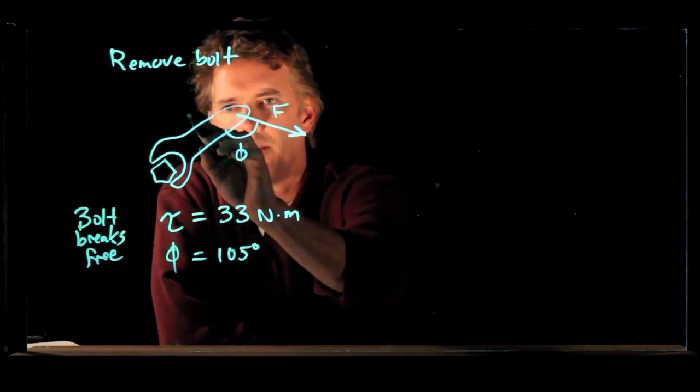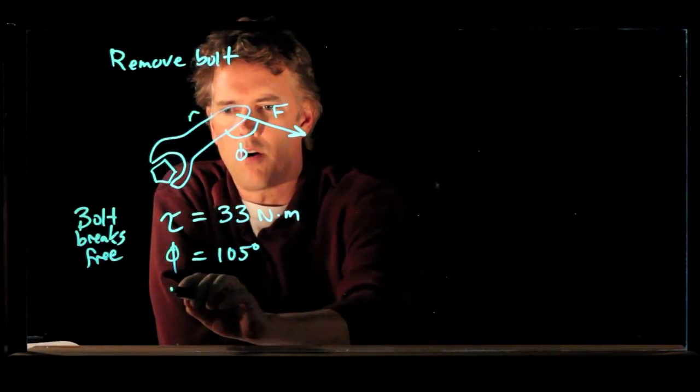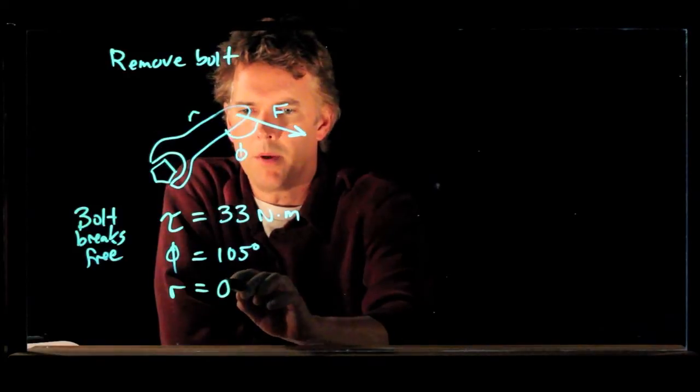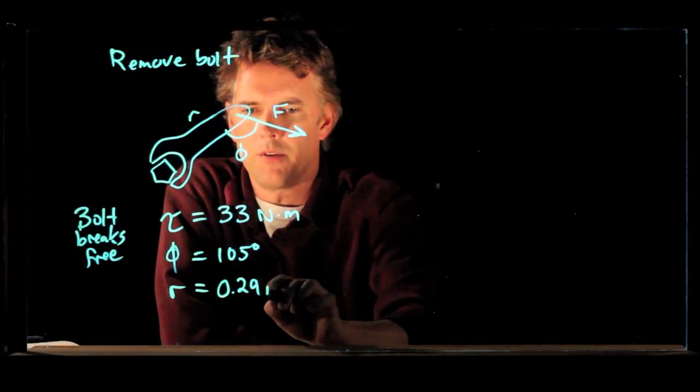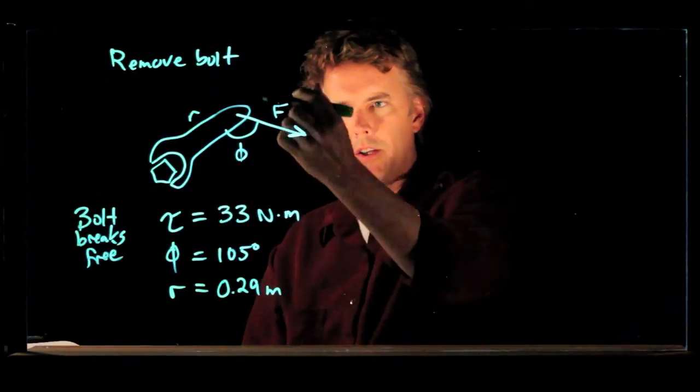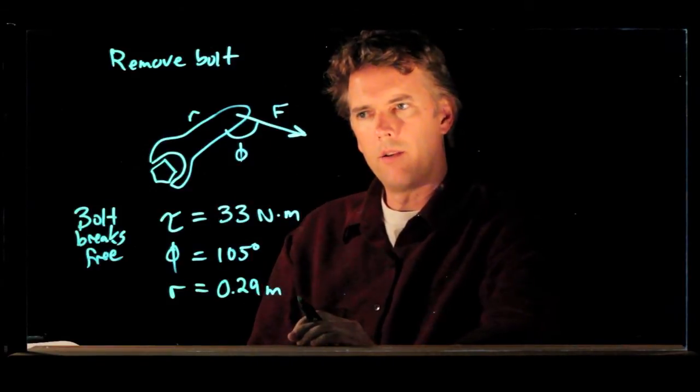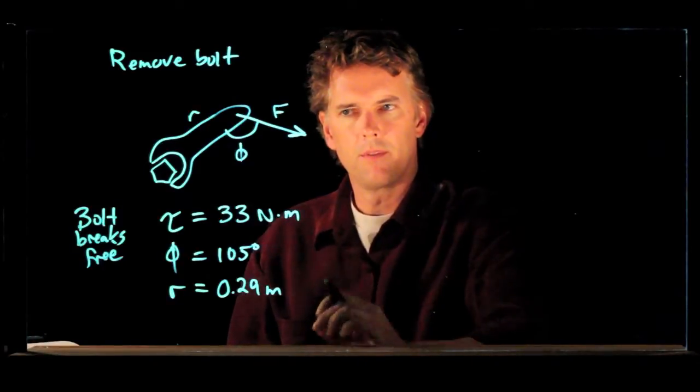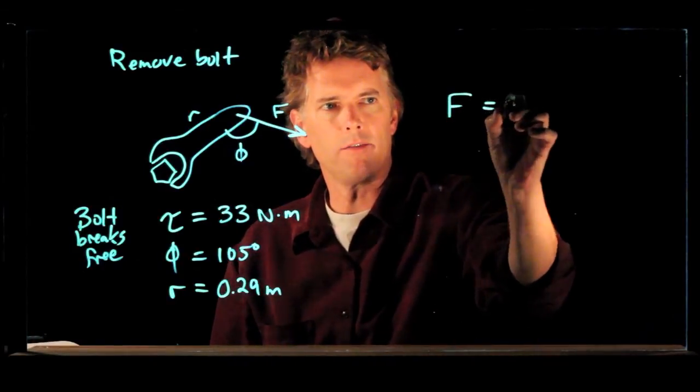And let's say that your wrench length is R. And that is 29 centimeters which is 0.29 meters. And now the question is, how hard do you have to pull on that wrench to actually loosen the bolt? Okay, so we're looking for F.